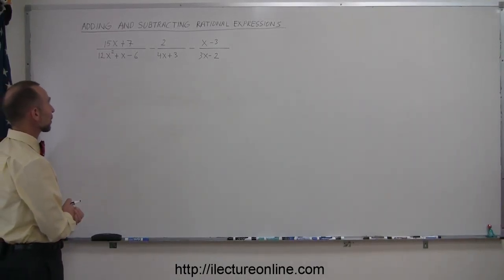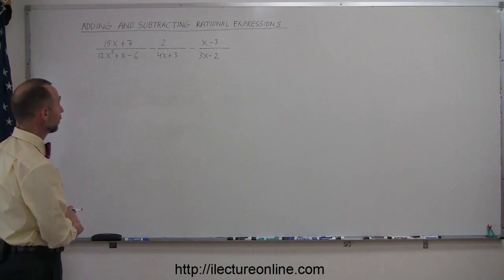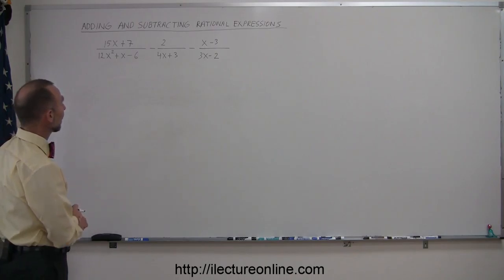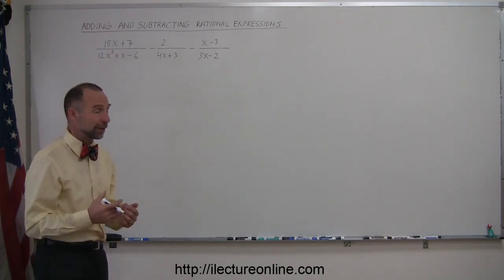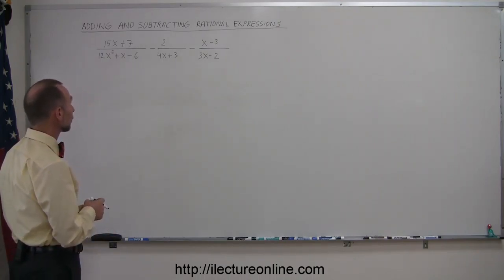And here's another example of how to add and subtract rational expressions. This looks a little bit more complicated than what we've seen so far. We have three fractions here, or three rational expressions more properly said, subtracted from one another, and clearly they don't have the same denominators, so we have to find a way to find the lowest common denominator.